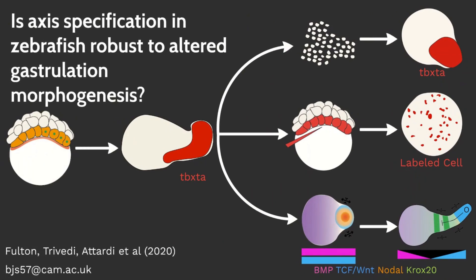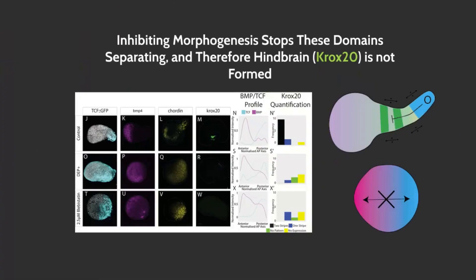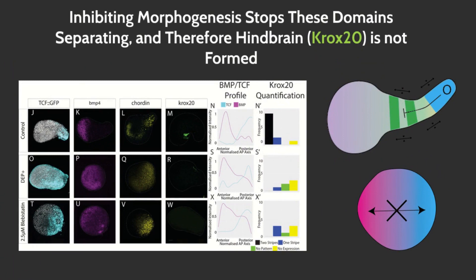We observe that in early pescoids prior to elongation, activity of two major signalling pathways, BMP and Wnt, are uniformly distributed across the pescoid, as shown here by stainings for BMP7 and a Wnt activity reporter. Over time, we observe that these two domains separate with BMP localised in the anterior and Wnt localised in the posterior. In between these two domains, we observe expression of the hindbrain marker Crox20, as can be seen on the top line.